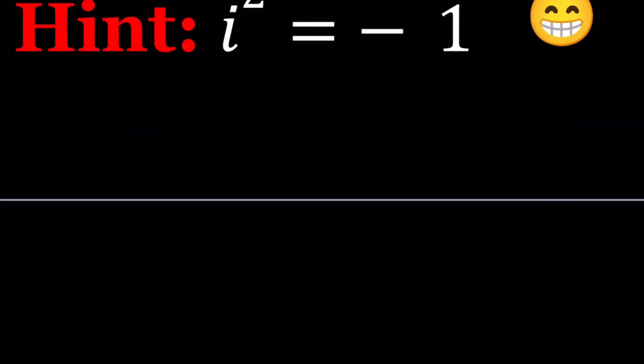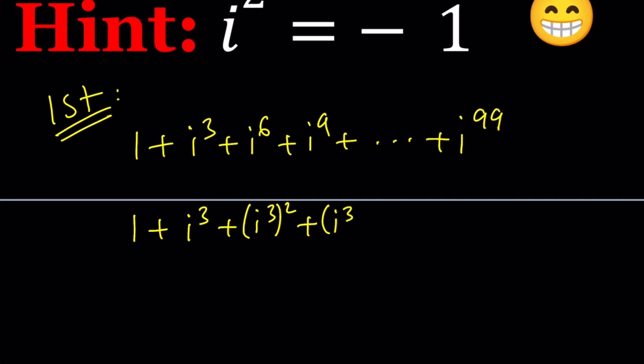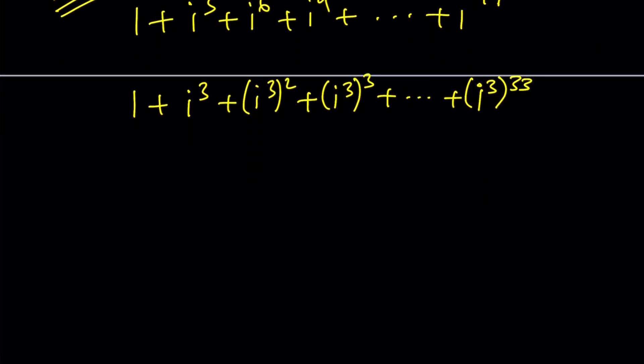First method. For my first method, I want to use the sum of geometric series. This is a finite geometric series. This is 1 plus i cubed plus i to the 6 plus i to the 9th, and it goes all the way up to i to the power 99. Notice that we can write i to the 6 as i cubed squared, i to the 9th as i cubed to the 3rd power, and i to the 99th power as i cubed to the power 33.